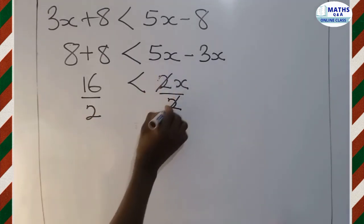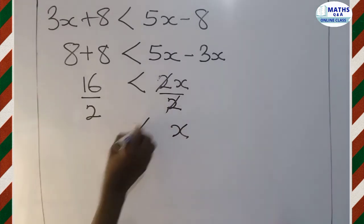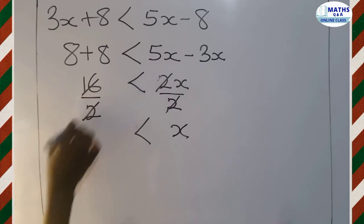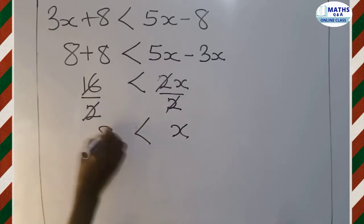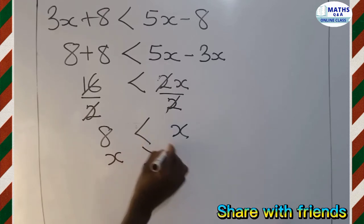So 2 divides 2. It gives us what? 1. Multiplying x gives us x. We have this inequality sign. 16 divides 2. It gives us what? 8. So you see that we have x, which is greater than 8.